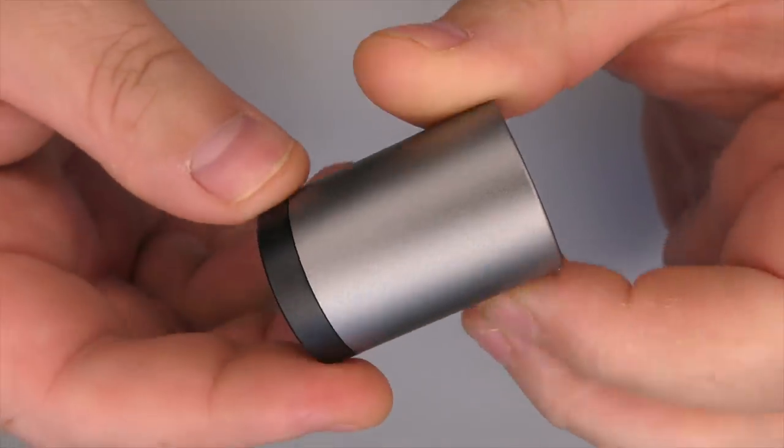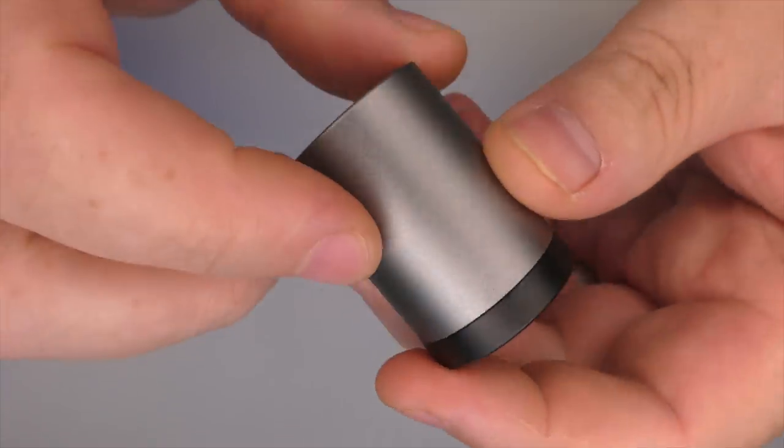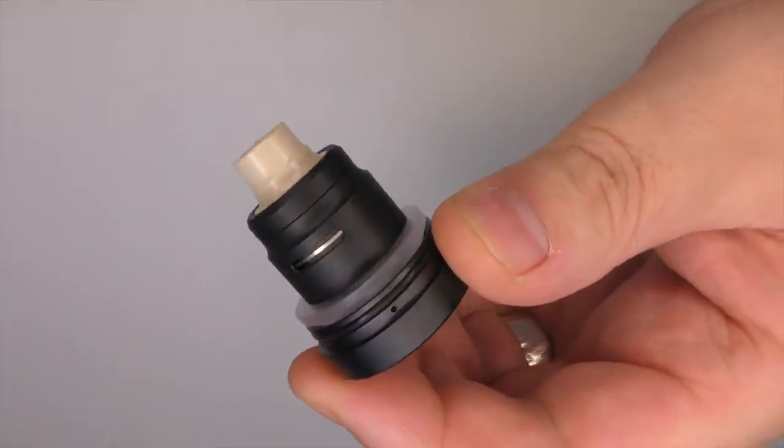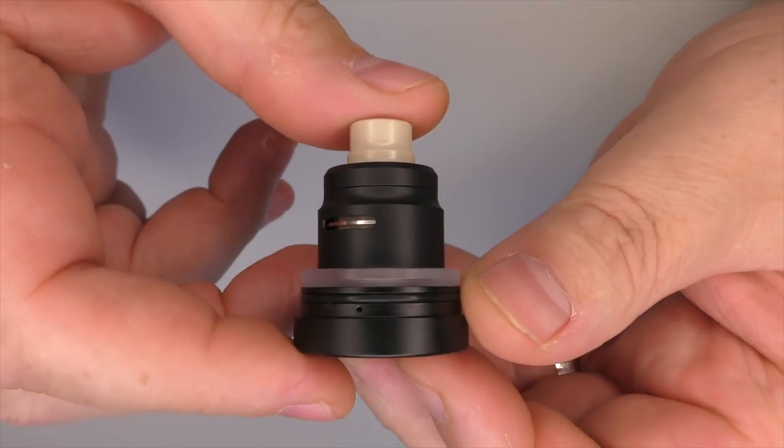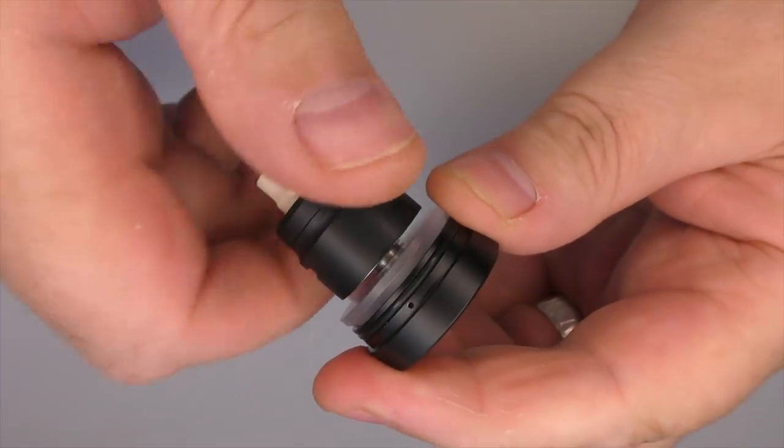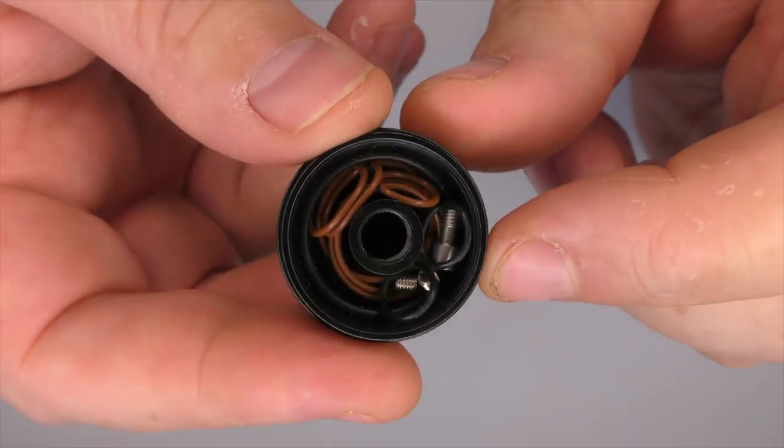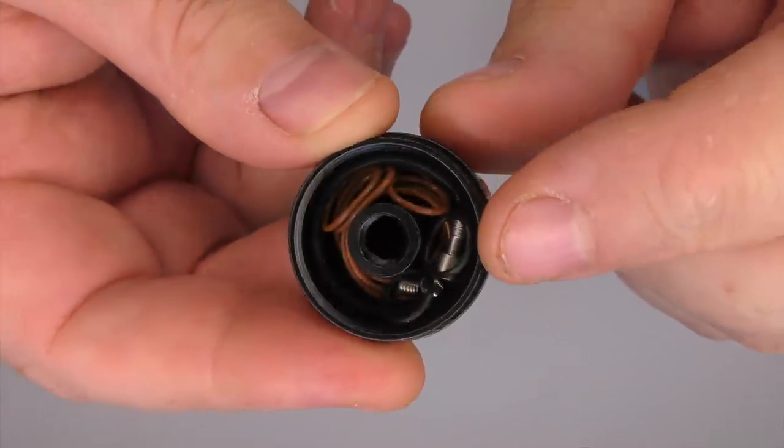Pull this cap off here and you can see that you have a little 510 adapter stand there. Just unscrew the adapter off of here, prise this cap off, and you'll find all your spare o-rings, the standard 510, and a couple of extra post screws.